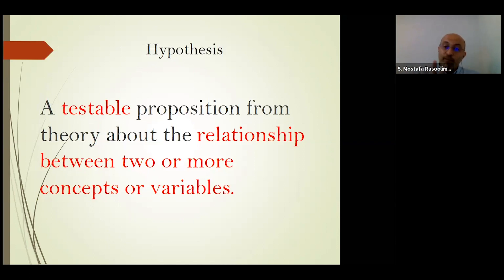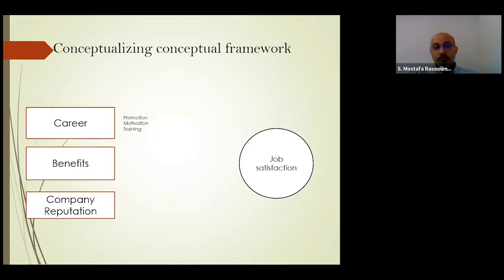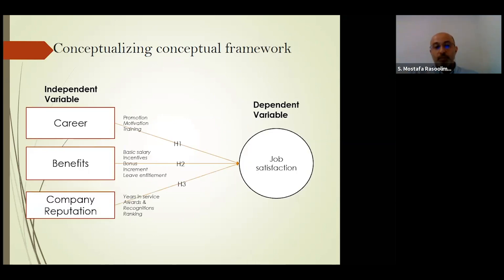Hypothesis should be justified based on theory and must express a relationship between two variables. For example, three hypotheses in a study should each be supported by theory — such as organizational theory supporting the effect of a variable on job satisfaction.